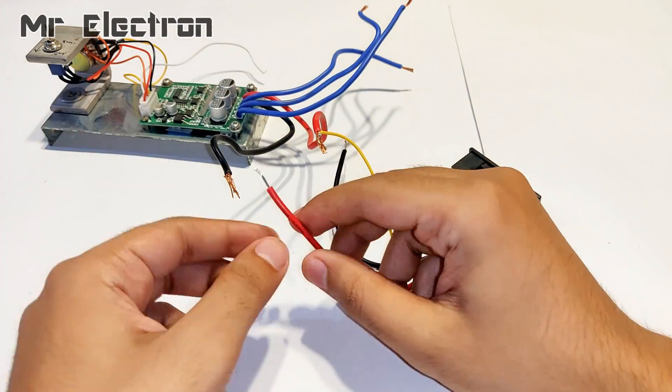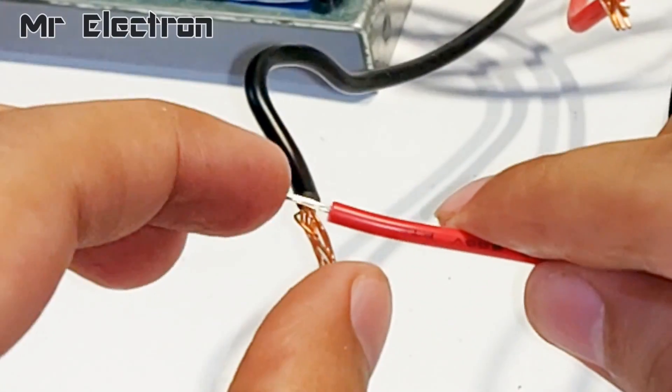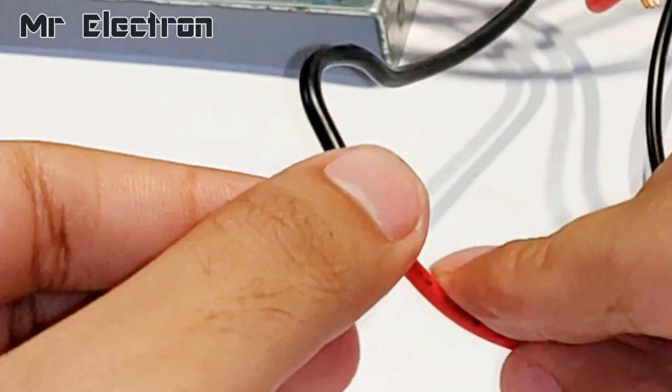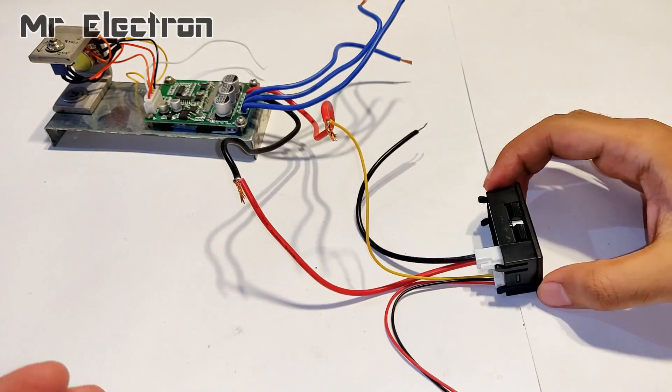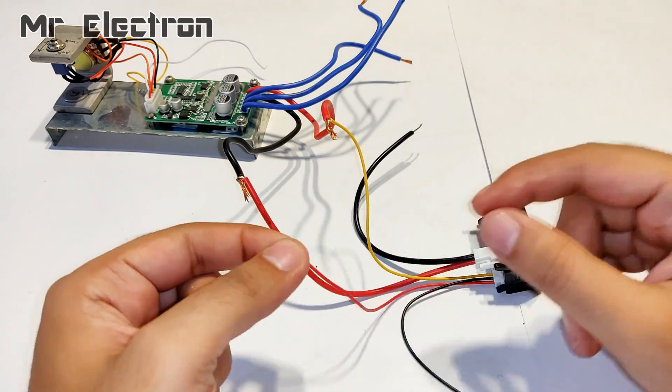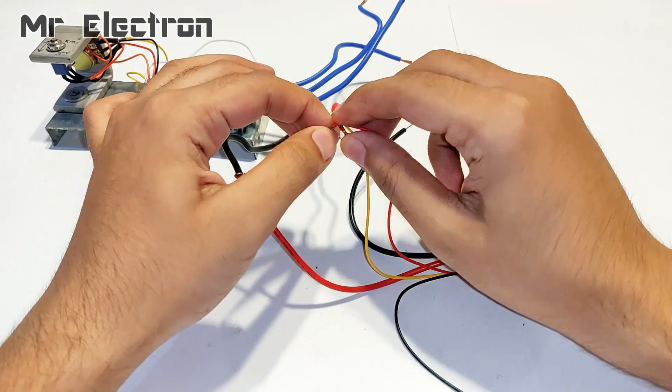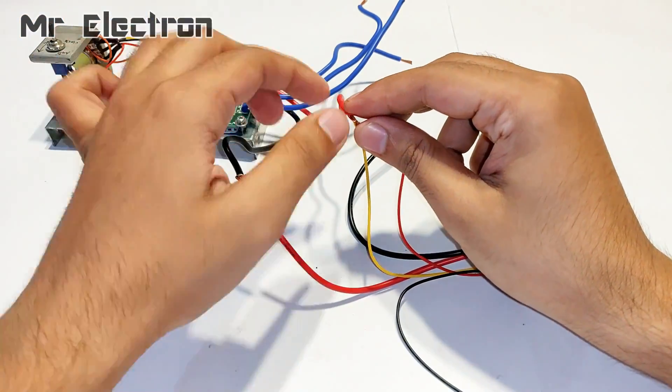As you can see, the thin yellow wire from the meter will be connected to the positive of the load. The thick red wire from the meter will be connected to the negative of the load. And the thin red wire from the meter will be connected to the positive of the load.